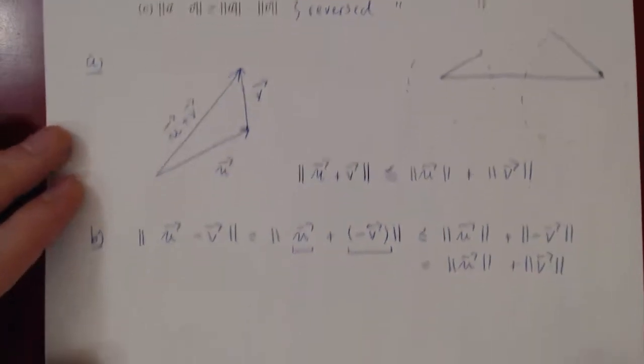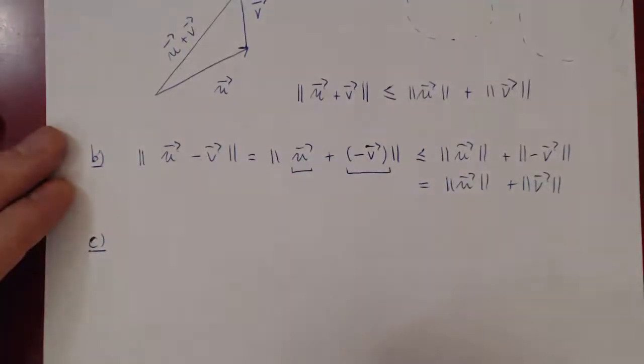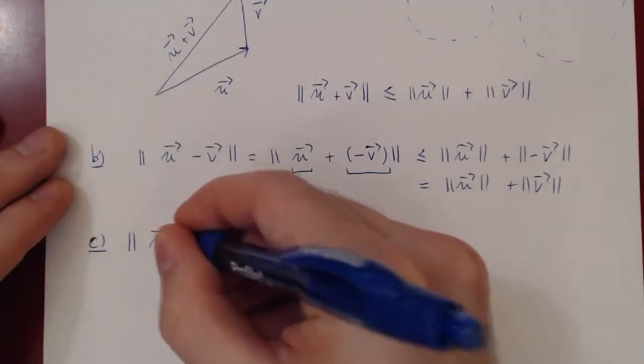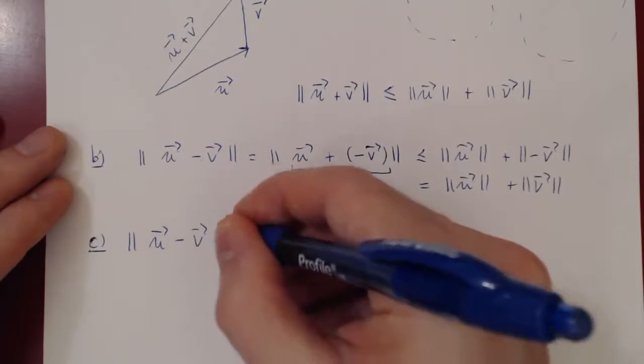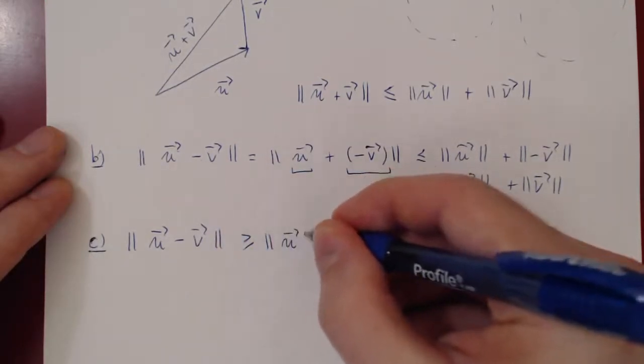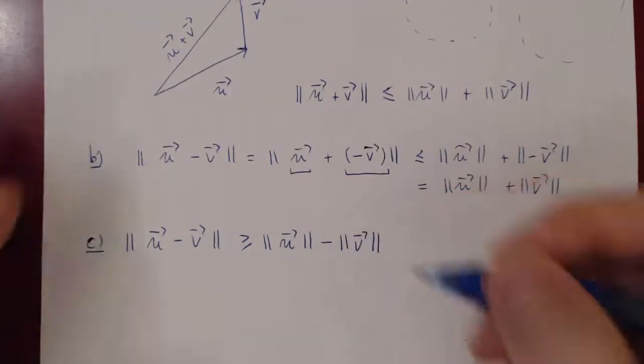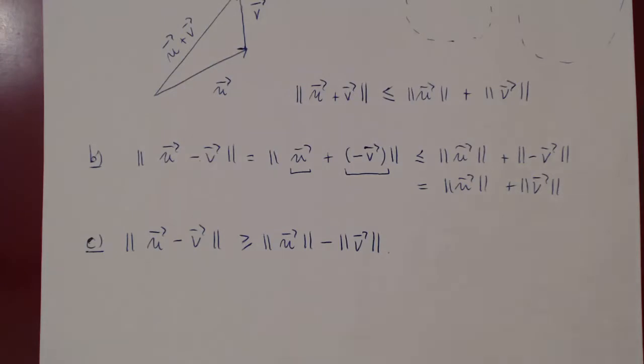And to prove c, which is called the reversed triangle inequality, which says that the norm of u minus v will have to exceed always the norm of u minus the norm of v. And I will let you prove this one. And you think of it, you want to again build a triangle and use the fact that for any given triangle, the length of any edge cannot exceed the sum of the lengths of the other two edges.